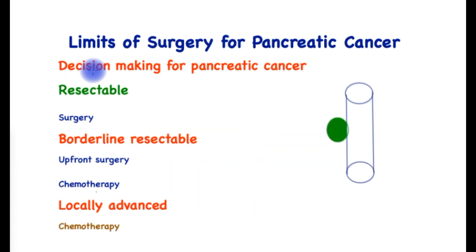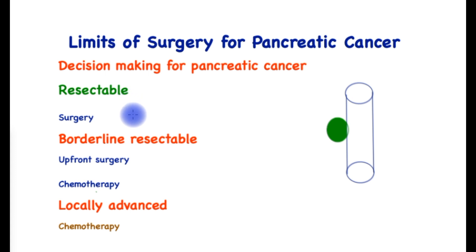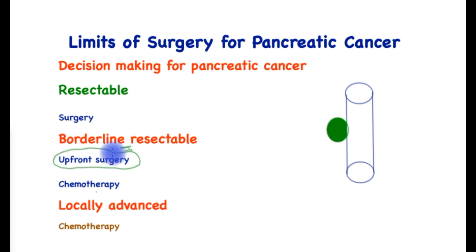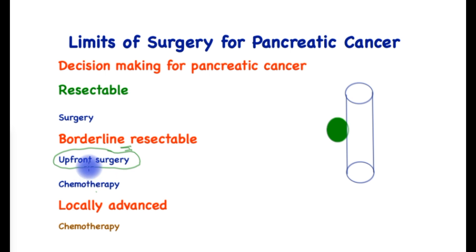Let's discuss the decision making for pancreatic cancer. For resectable or removable pancreatic cancer, surgery should be performed upfront. If the tumor is borderline resectable, the surgical team ought to assess whether upfront surgery has a reasonable to fair chance of achieving curative resection — an R0 resection. In other cases, chemotherapy should be deployed.